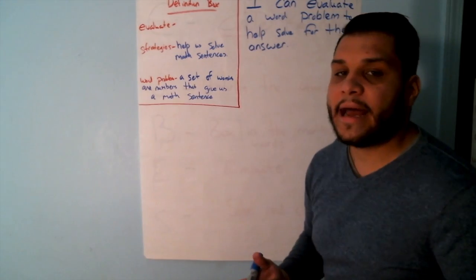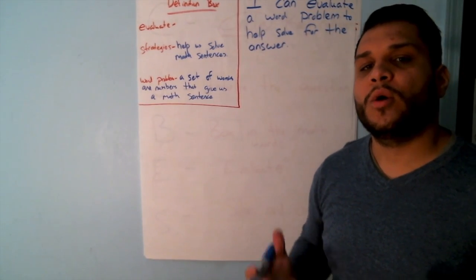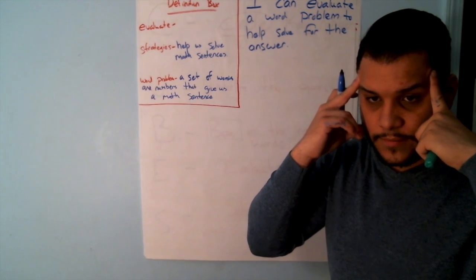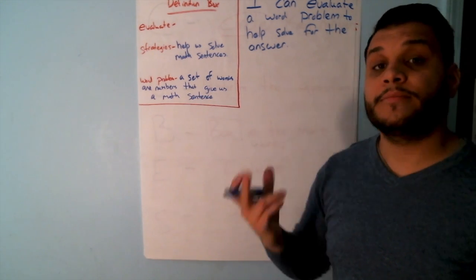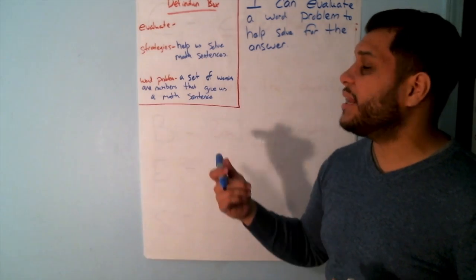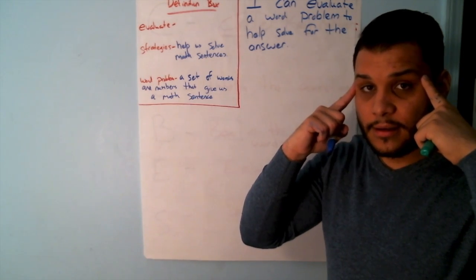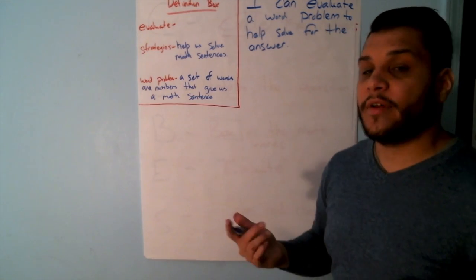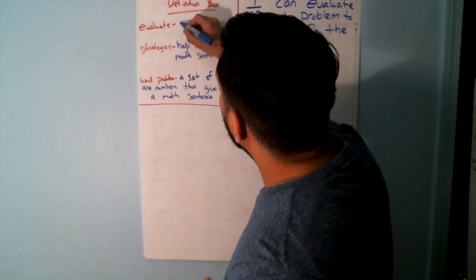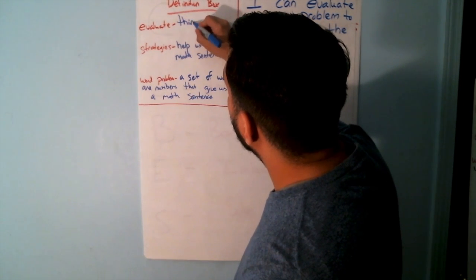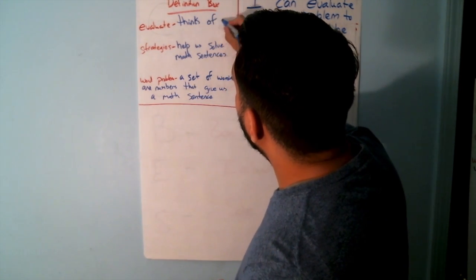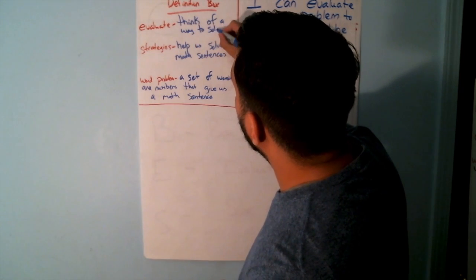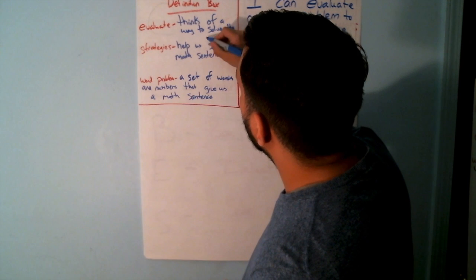And the last thing that I have up here is evaluate. What do we do when we evaluate? A good word for evaluate might be to think on how we will solve a problem. So we think of a way to solve the problem.